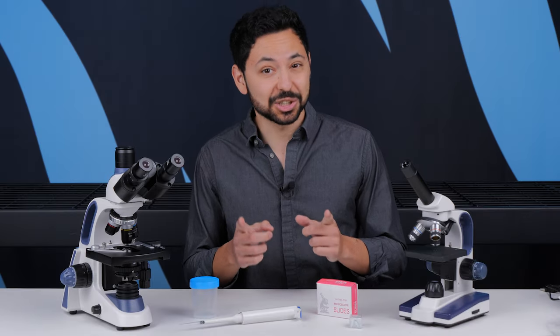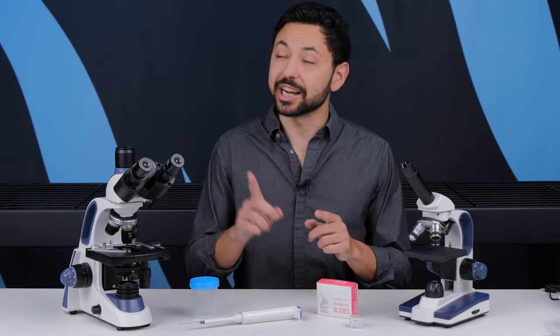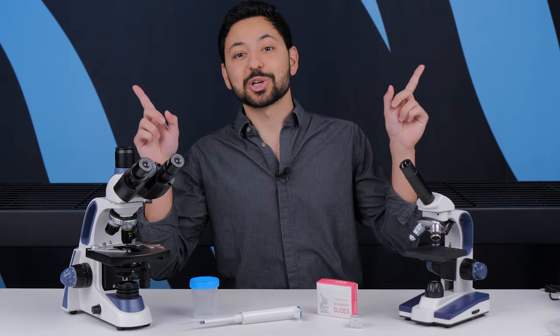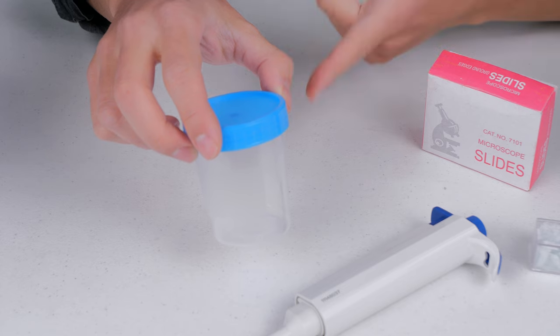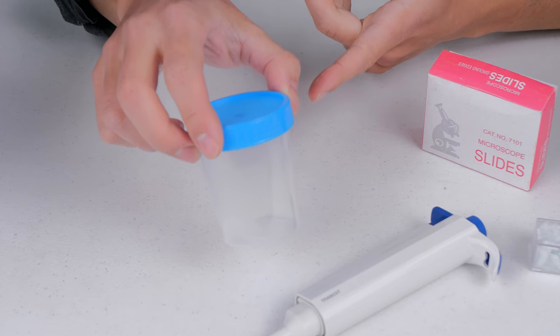Only certain types of microscopes can actually even see sperm. If you haven't checked it out yet, check out my What Microscopes to See Sperm video before this one. First, you're going to start out by collecting your sample in a jar. I'm sure you can figure out how to do this part.